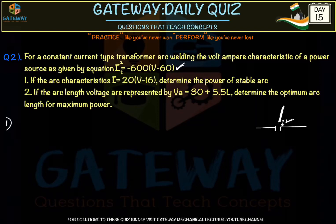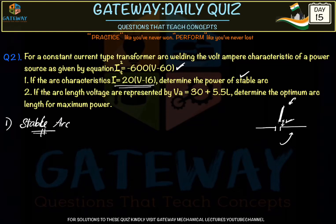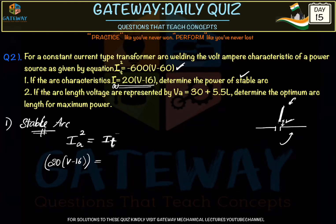For the power source, the volt-ampere characteristic IT² = −600(V − 60) is given, and the arc characteristic IA = 20(V − 16) is given. For a stable arc, the current at the arc must equal the current from the transformer. Squaring both sides: [20(V − 16)]² = −600(V − 60). This gives the quadratic equation: 4V² − 122V + 664 = 0.